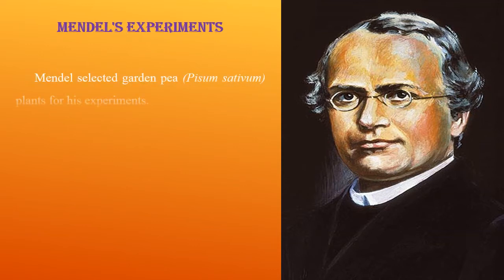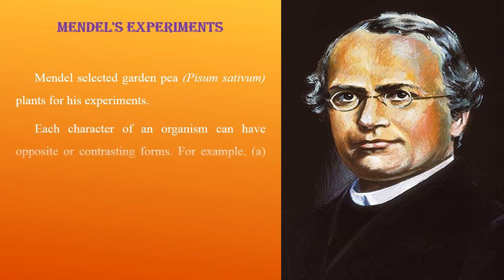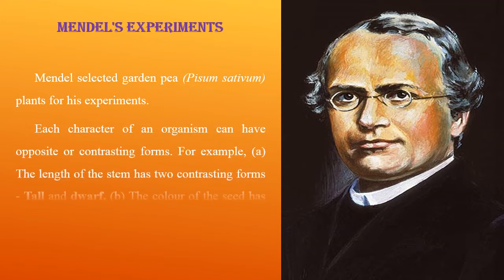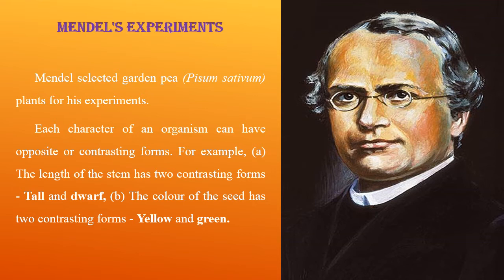Mendel selected green pea, that is Pisum sativum, plants for his experiments. Each character of an organism can have opposite or contrasting forms. For example, the length of the stem has two contrasting forms — tall and dwarf — and the color of the seed has two contrasting forms — yellow and green.